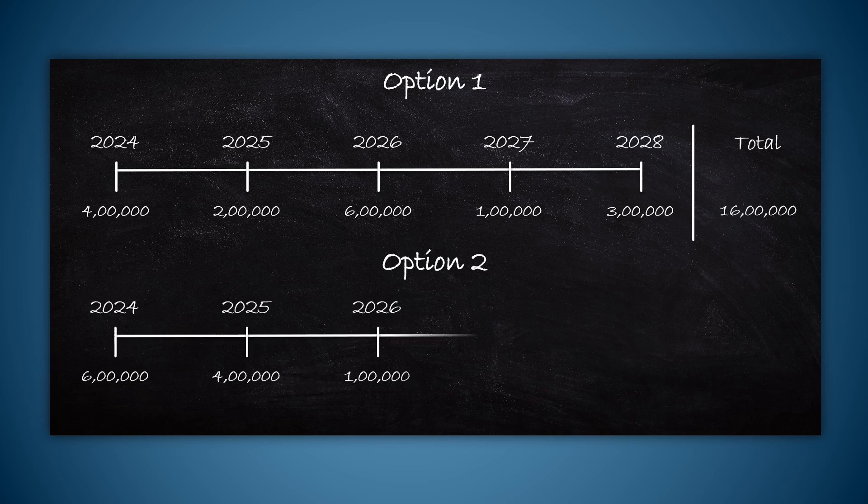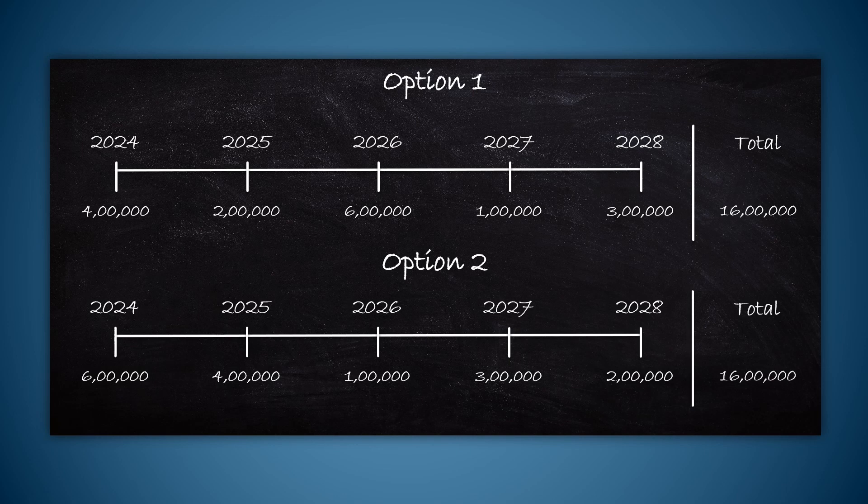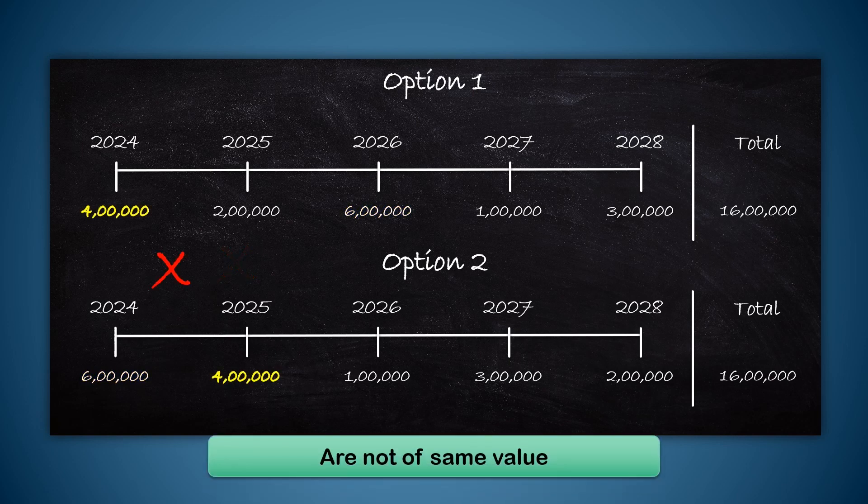Under option two, you will also get 16 lakhs over the same period, but the amount you get in each year is different. If you only look at the total, you will think both are exactly the same, but that is not the case. This 6 lakh is not the same as this 6 lakh because they come in different years.